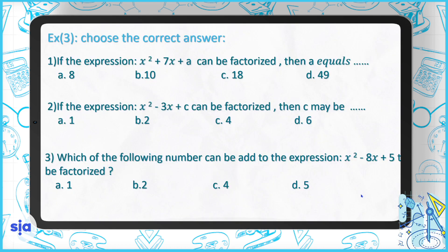Now moving to another type: choose the correct answer. If the expression x squared plus 7x plus a can be factored, what can a be? Since the last sign is positive, we're looking for two factors of this number whose sum is 7. The answer is 10, because its factors are 5 and 2.